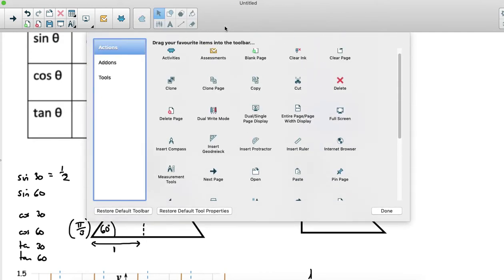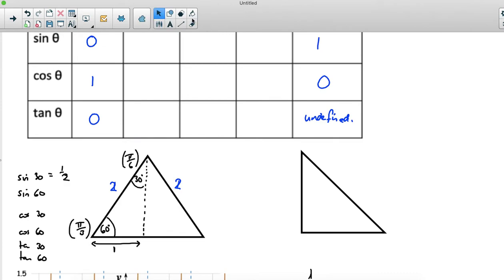So with a bit of very simple Pythagoras, you know that this length here, let's just call it x for now, the x is the square root of two squared minus one squared, which is the square root of three. So I'm just going to replace that x with root three. So sine of 60 is root three over two, opposite over hypotenuse.